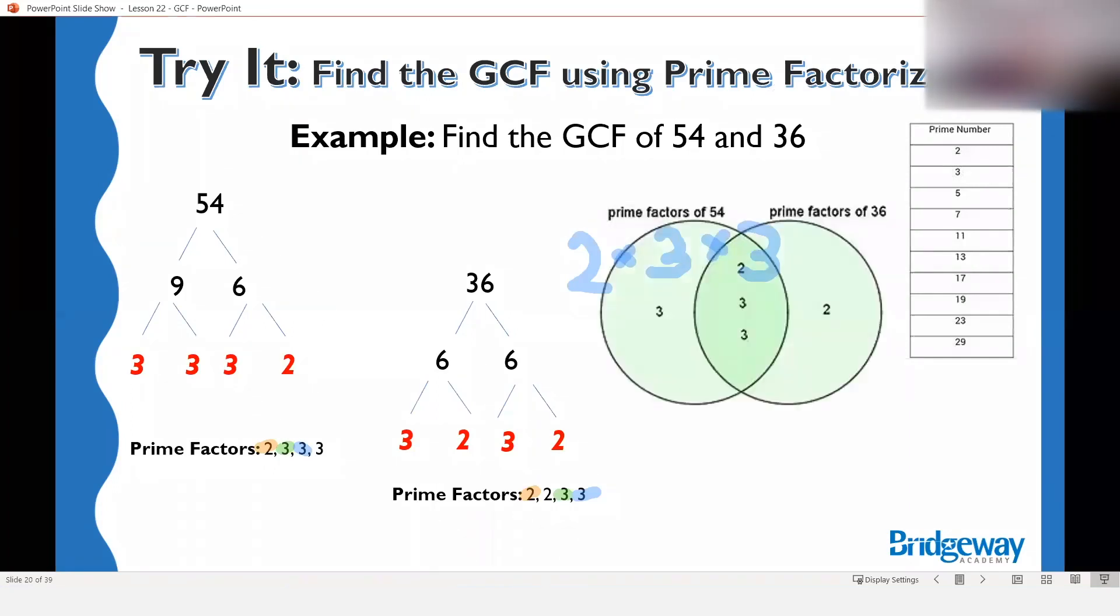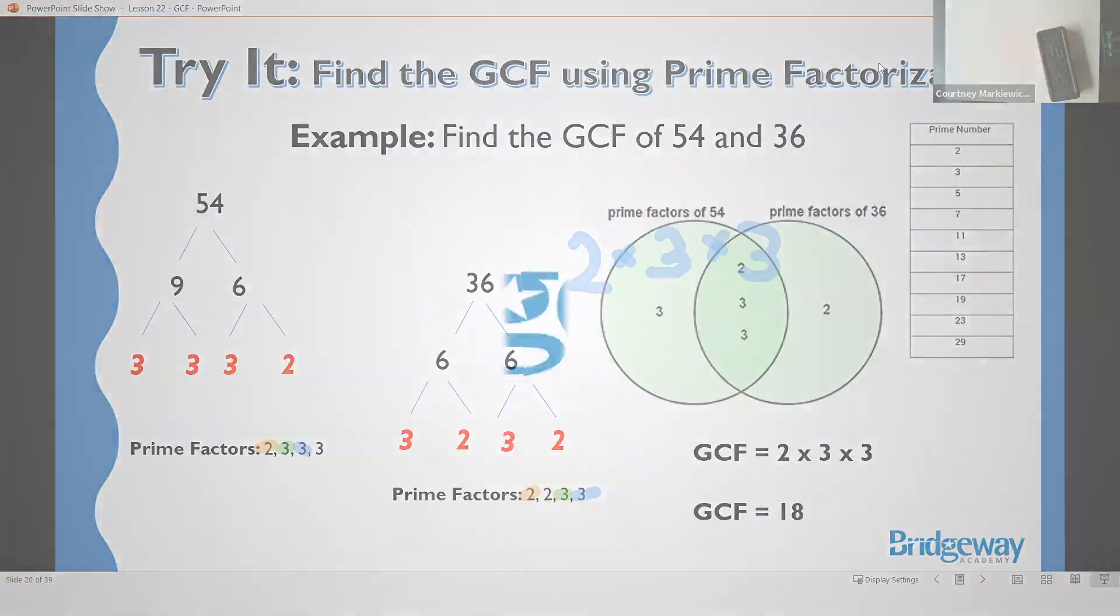Okay, if you like the visual with the Venn diagram, we can see that we end up with the same answer. Multiply those together to get 18. Okay, so again, two different methods, you guys. We're gonna practice a couple in a minute here. One is using factor trees and finding what's in common, multiplying them together. The other is making a list of all the factors and seeing what the greatest one is. So whichever strategy you prefer.